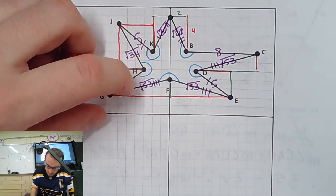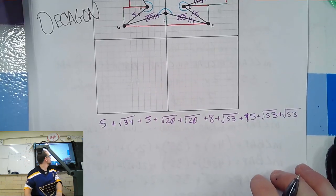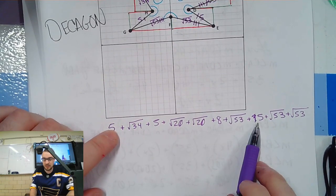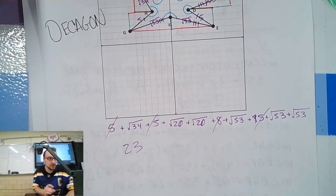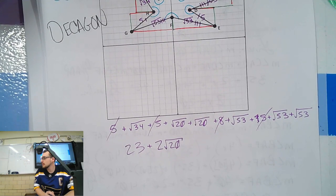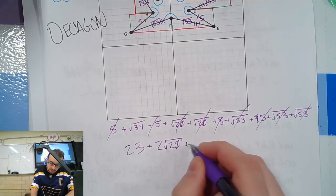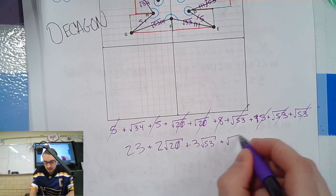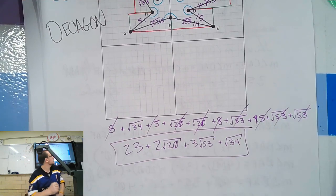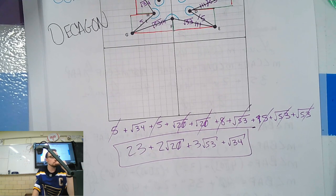Now we add them all up: five plus √34 plus five plus √20 plus √20 plus eight plus √53 plus five plus five plus √53 plus √53. Combining like terms: the constants five, five, eight, five, five add to twenty-three. We have two √20's, three √53's, and one lone √34. So the perimeter is twenty-three plus two√20 plus three√53 plus √34.